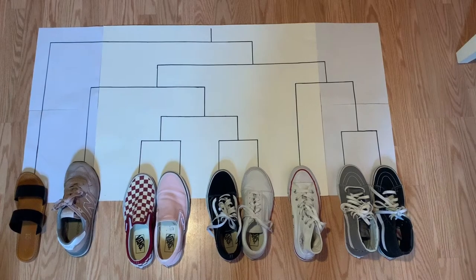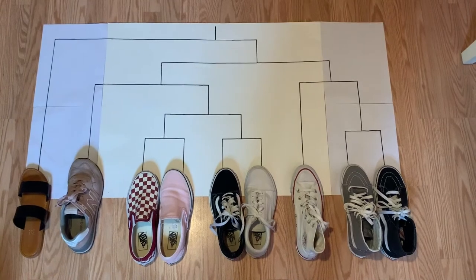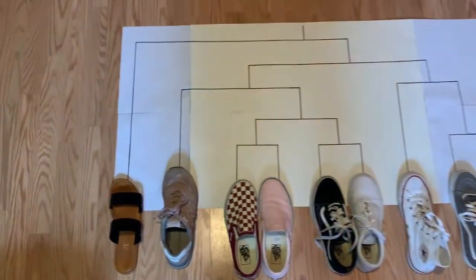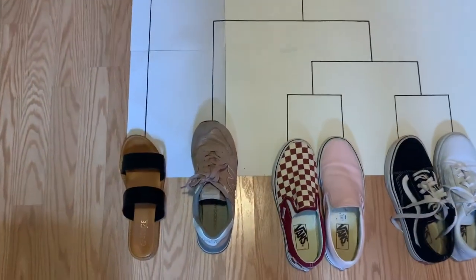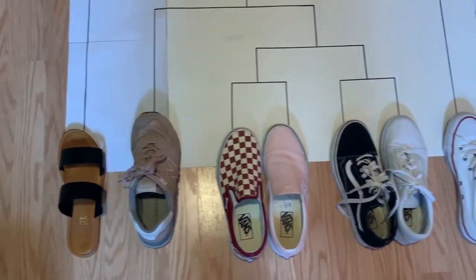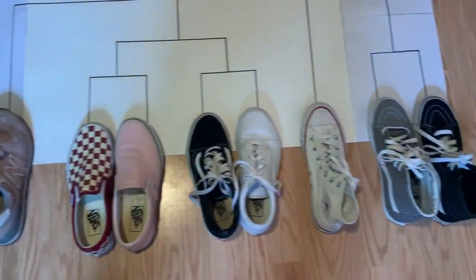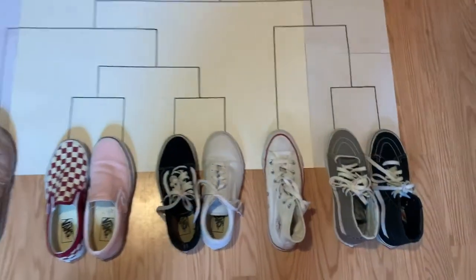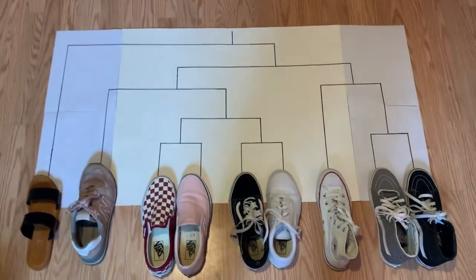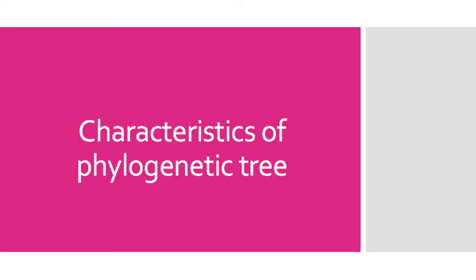Groups are classified based on their degrees of similarities and defined as operational taxonomic units, or OTUs. In my example, each shoe is an OTU.